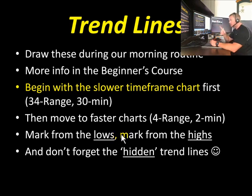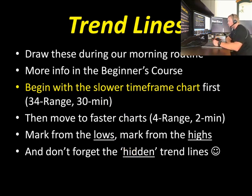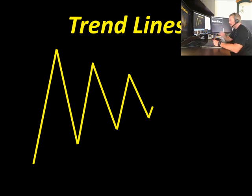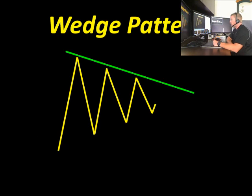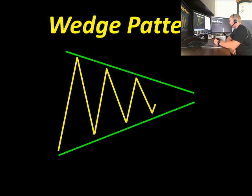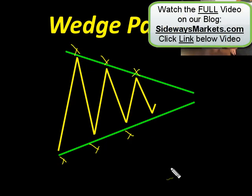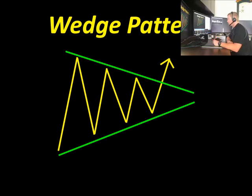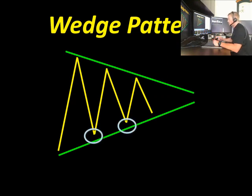We'll mark the lows, we'll mark the highs, and don't forget about these hidden trend lines. Now here's what we saw this morning — we've got a little bit of a sideways market here, and we define a wedge pattern. At the highs, we mark the highs; we mark the lows. And then we wait for price to break out. Once price breaks out of that wedge pattern, that's going to be our clue to take the breakout trade. Or we can trade inside the wedge pattern — sell the highs or buy the lows at the bottom.